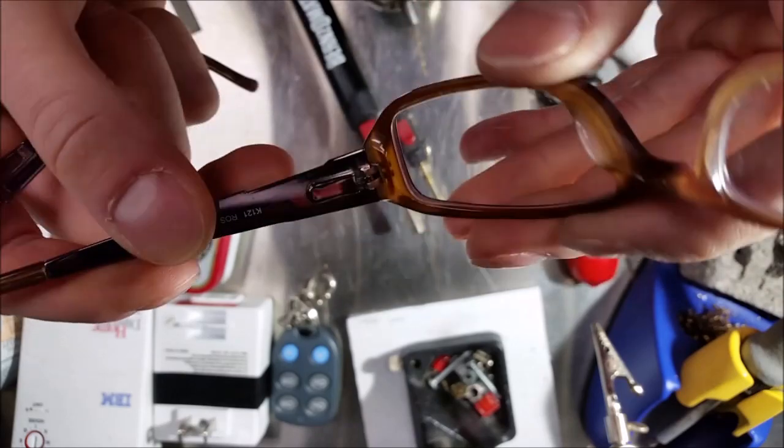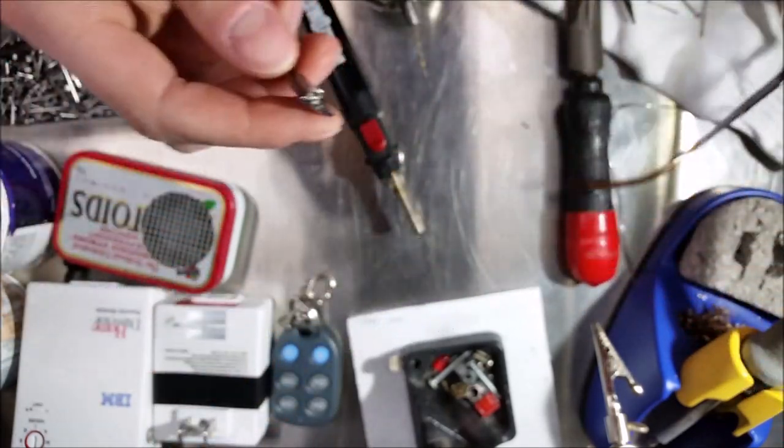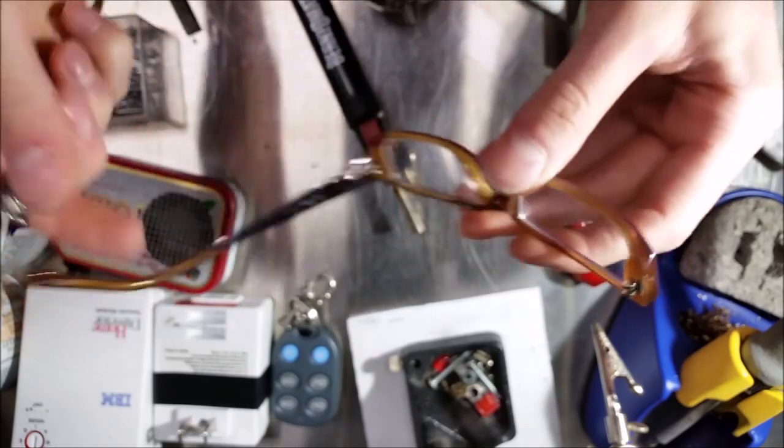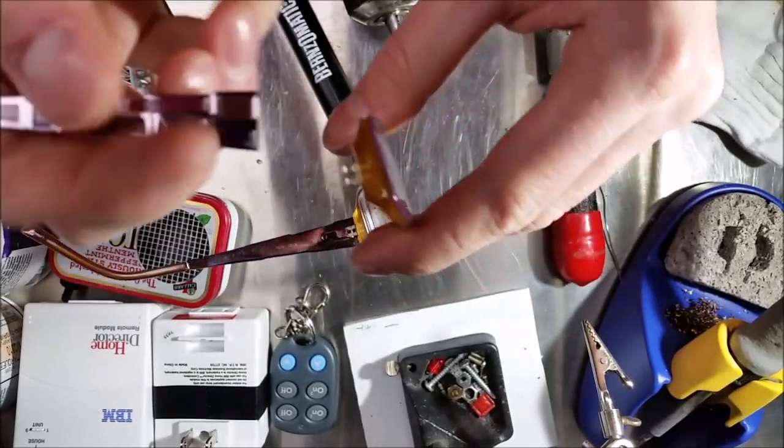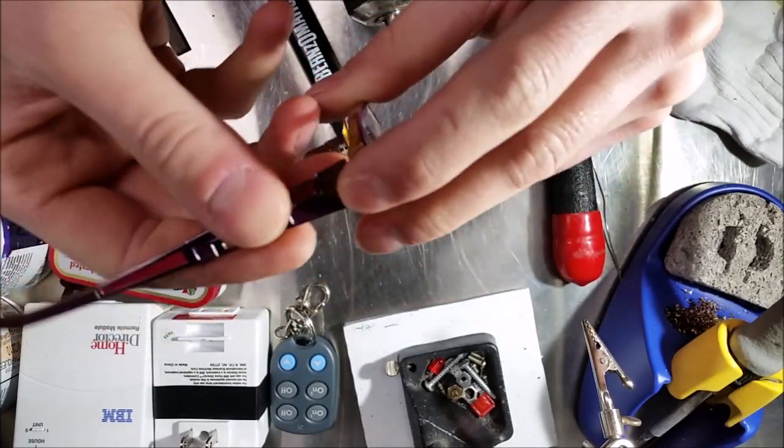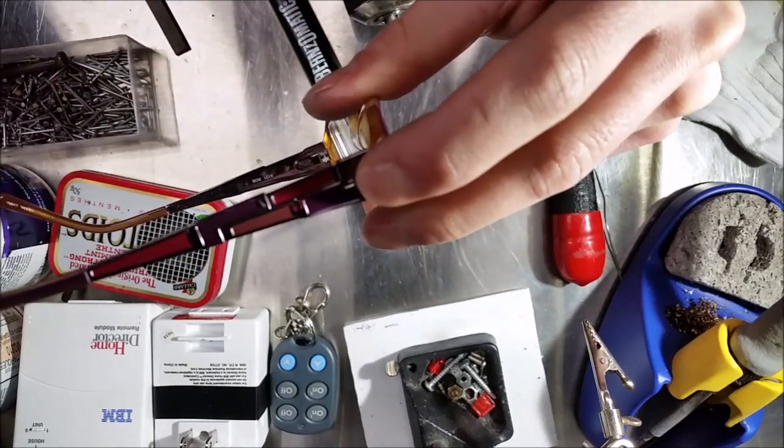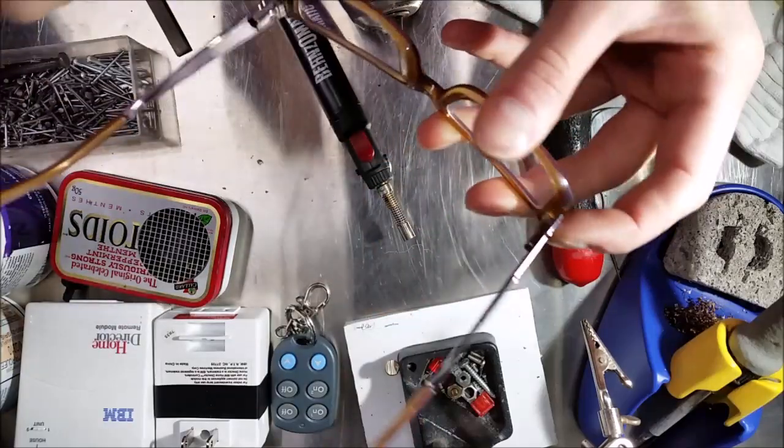So the little tang broke clean off, so the only alternative was to either A, replace the glasses, B, get a new arm, or C, glue or epoxy the arm to the glasses permanently, like that, so at least they can be used, and obviously this side wouldn't fold.